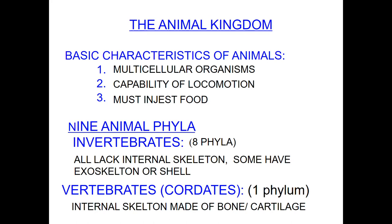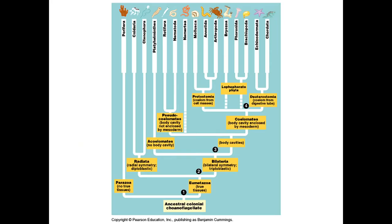Cartilage would be your chondrichthyes. So you have Porifera — no true tissues; these are your sponges. Then you have Cnidaria — these are your jellies, with radial symmetry. Then you have Ctenophora. These are your acoelomates, or no body cavity. Then you have your pseudocoelomates — body cavity not enclosed by a mesoderm. So there's your Rotifera.